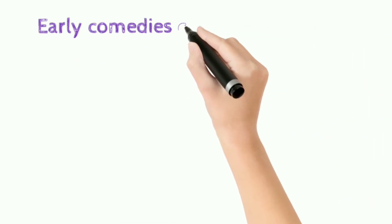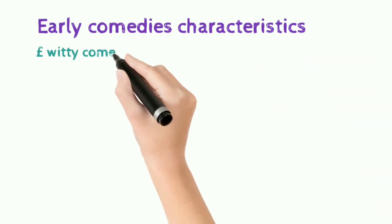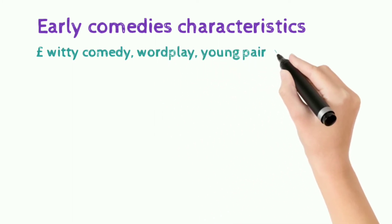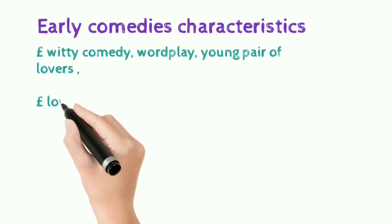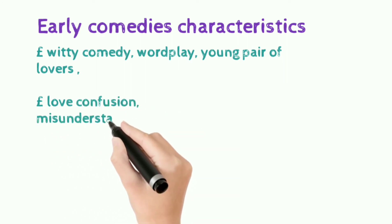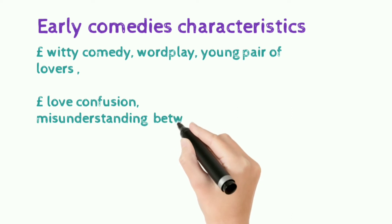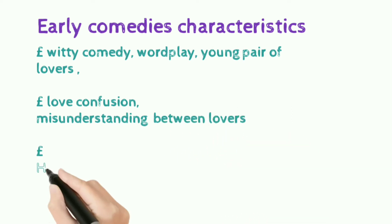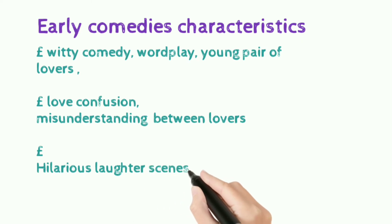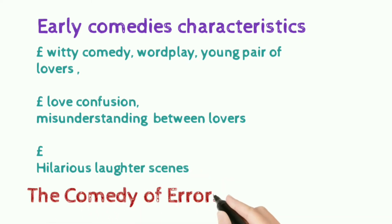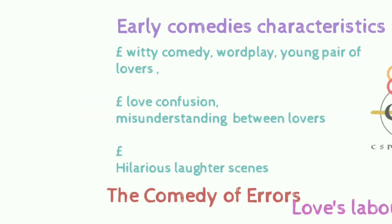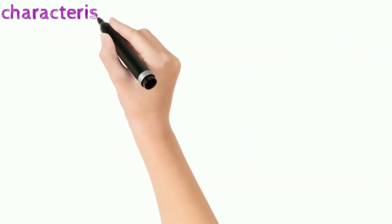The characteristics of early comedies include witty comedy and word play. They attract young pairs of lovers, and the main theme is love confusion or misunderstanding between lovers. They provoke hilarious laughter in the audience. Famous examples include A Midsummer Night's Dream and Love's Labour's Lost.